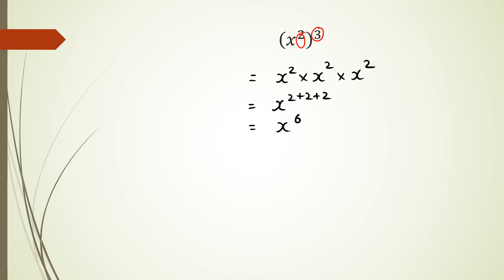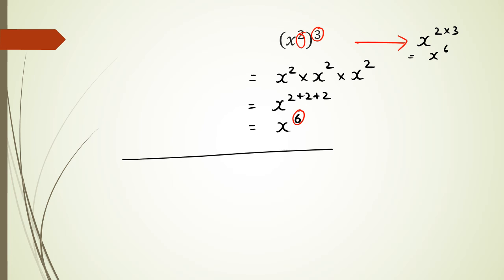So what do you notice between these three numbers here — what's the pattern that you see? If you said two times three is six, you are absolutely correct. So the shortcut for doing this would be to write it as x to the power of two multiplied by three, which in turn gives us x to the power of six.